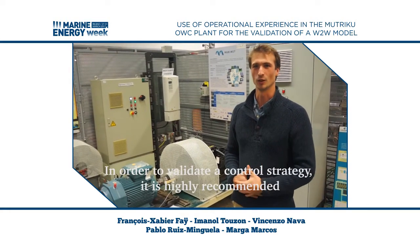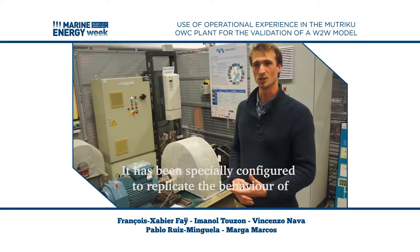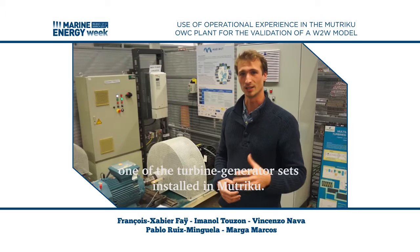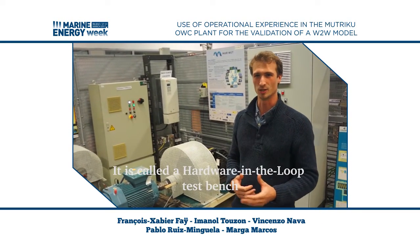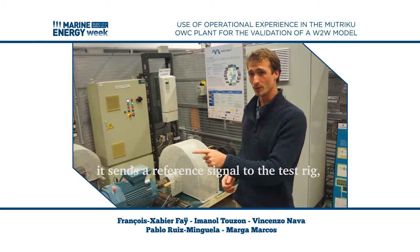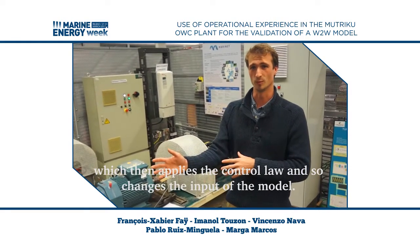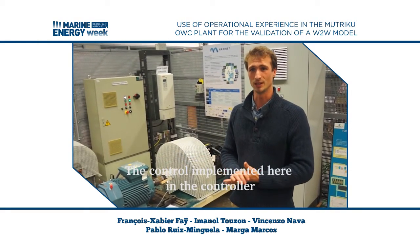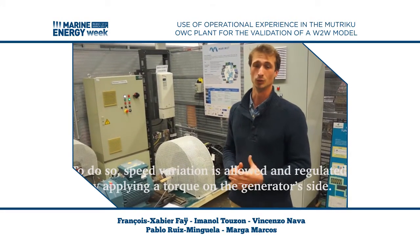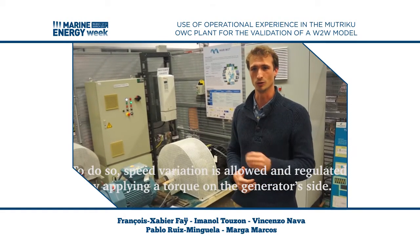In order to validate a control strategy, it's highly recommended to use an electrical infrastructure like this one. It's been specially configured to replicate the behavior of one of the turbine-generator sets installed in Muchuku. It's called the hardware-in-the-loop test bench, because when the model of the plant is running in real time, it sends a reference signal to the test rig, which then applies the control law and changes the input of the model. The control implemented in the controller is designed so that the turbine operates at its best operating point. To do so, speed variation is allowed and regulated by applying torque on the generator side.